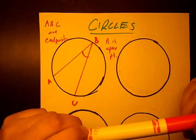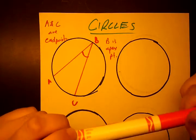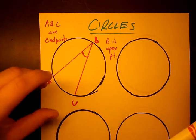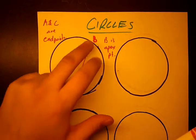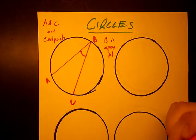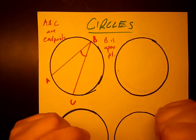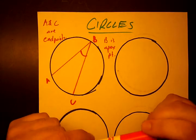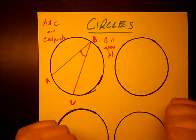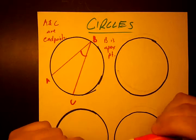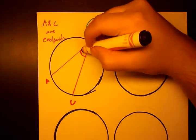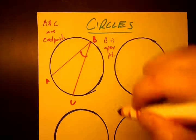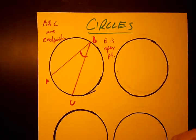The first thing to do is define what an inscribed angle is. I have a diagram here with points A, C, and B, where B, A, and C are lying on the circle. B is called the apex point and A and C are called endpoints. The angle at B is called the inscribed angle.